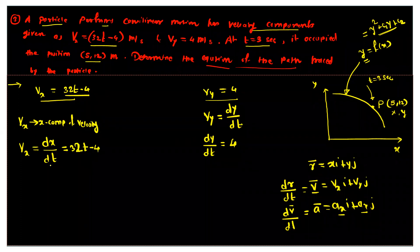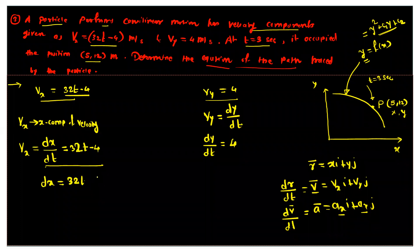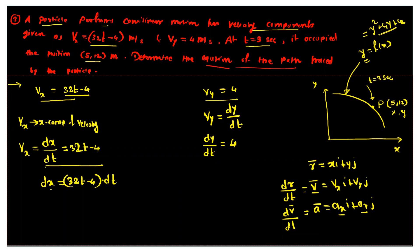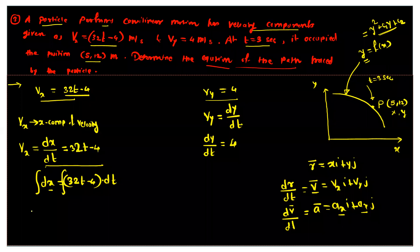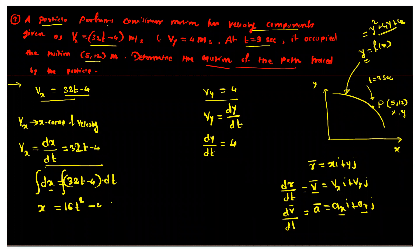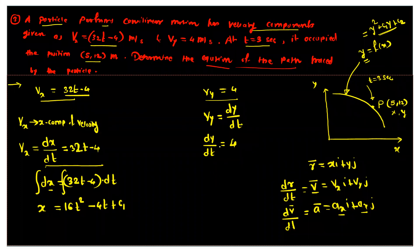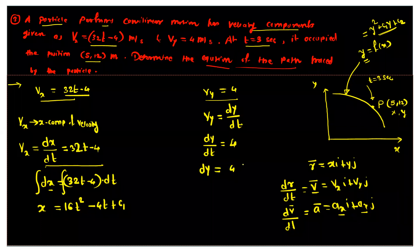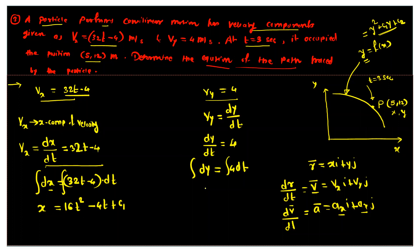From the vx equation we can write dx equal to (32t minus 4) dt, then integrate both sides to get x equal to 16t² minus 4t plus C1. Similarly, dy equal to 4 dt, integrating both sides gives y equal to 4t plus C2.